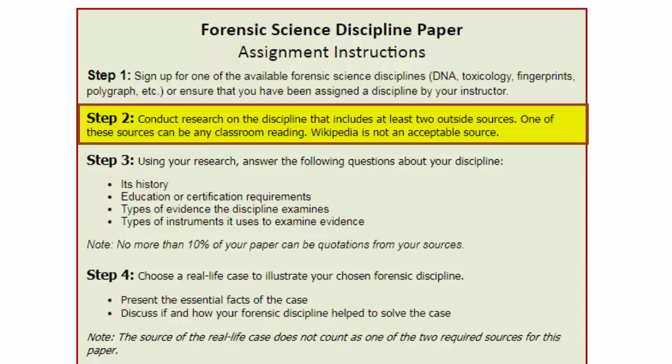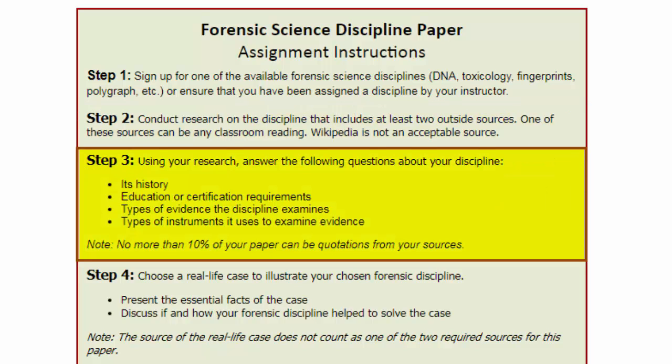Step 2 means collecting research on your discipline. You'll be using this research in Step 3 to answer these questions about your discipline: a brief look at its history, what education and certifications are required to practice it, types of evidence examined, and the types of instruments professionals in this discipline use. As you answer these questions, please keep in mind that no more than 10% of your work can be in the form of quotations.